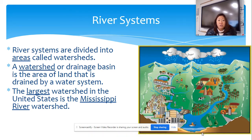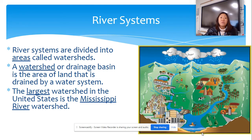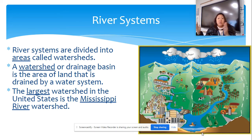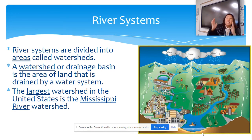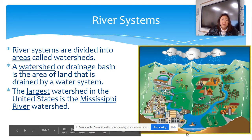We have a number of large watersheds in the United States, and they're all divided by mountains. On a larger scale, within the United States you're going to have different watersheds, and they're separated by mountain ranges — for example, the Appalachian Mountains. That's what separates the watersheds.